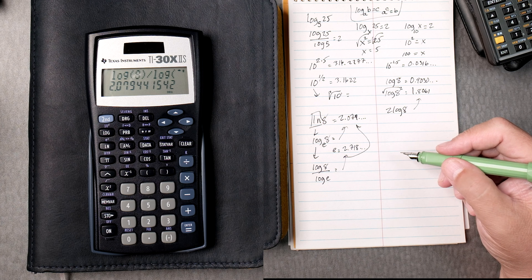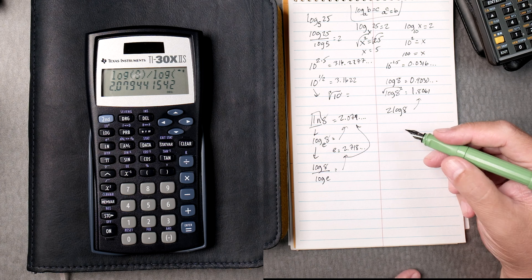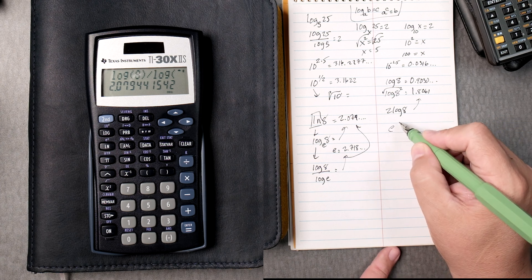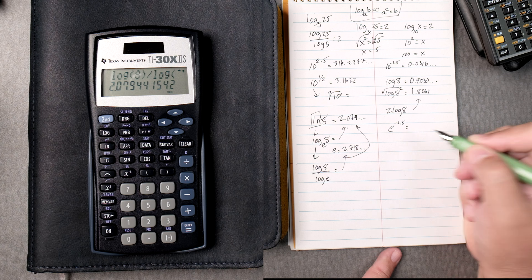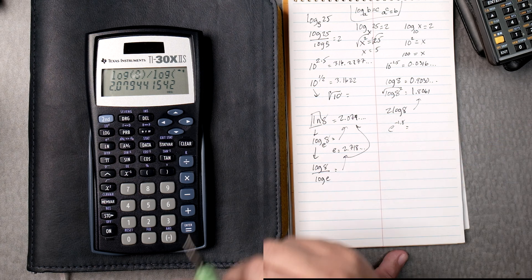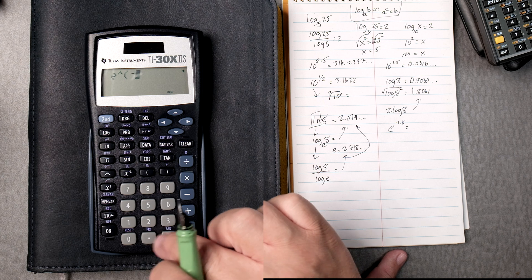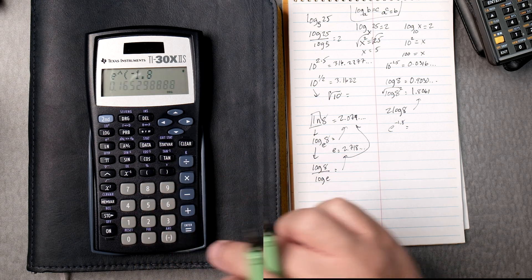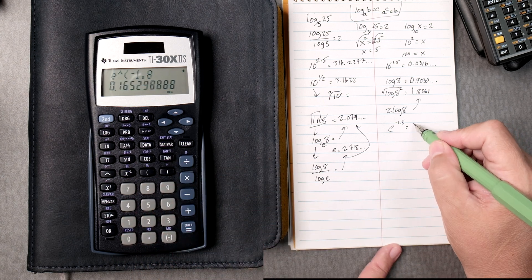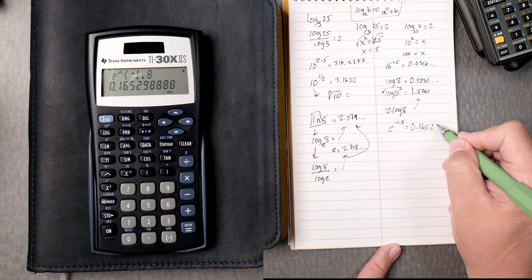Now, what's next? Well, let's say e to the negative 1.8. That's going to be second, log, negative 1.8, enter. That gives you 0.16529, keeps going.